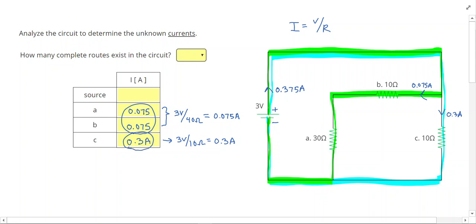You'll notice that I didn't count that 0.075 twice because the current that flows through B is the same current that flows through A. And I had 2 routes.